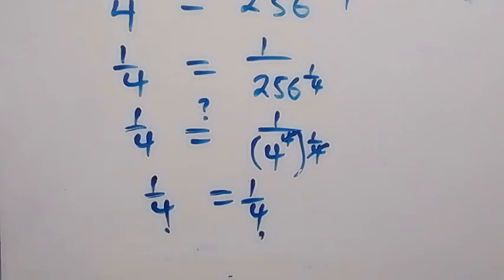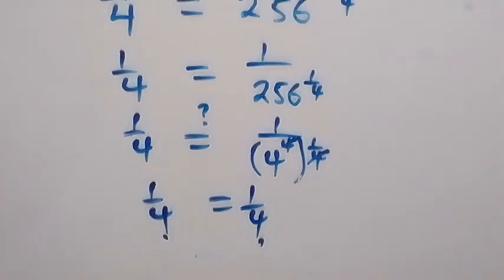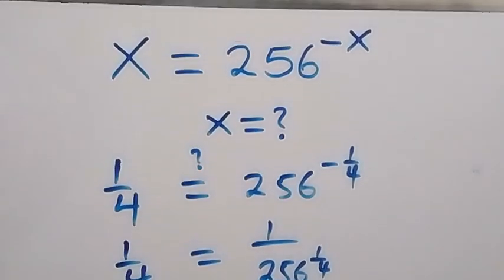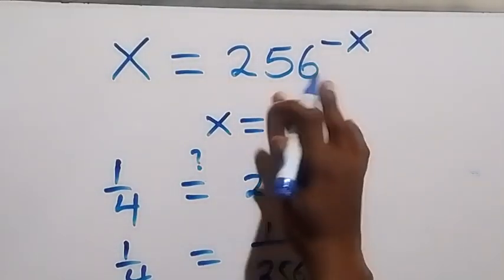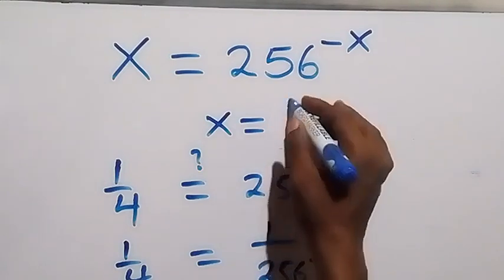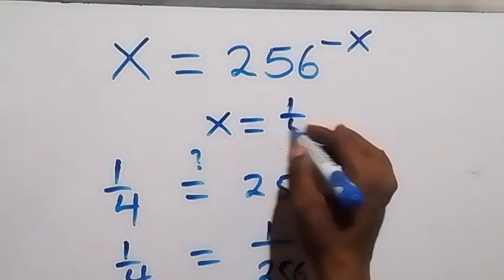The left-hand side equals the right-hand side, so we can conclude that x equals 1 over 4.